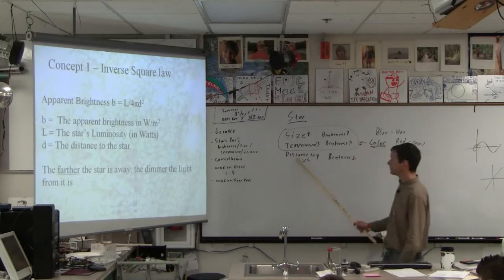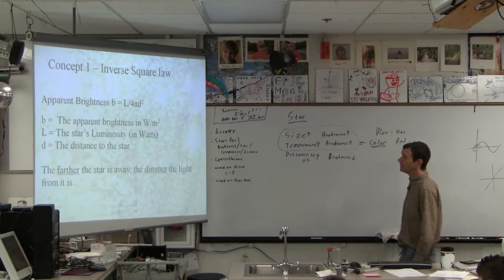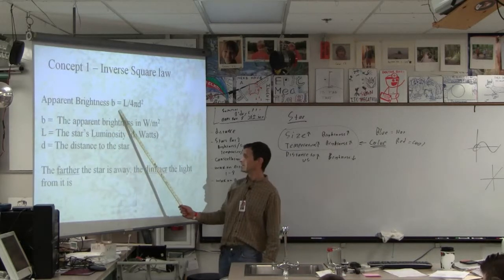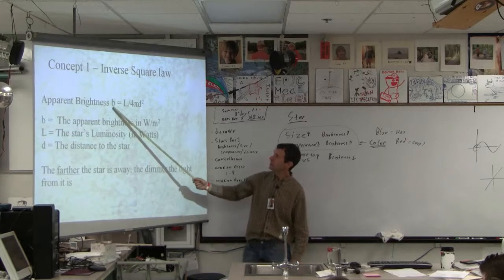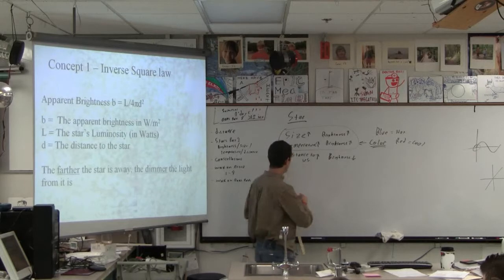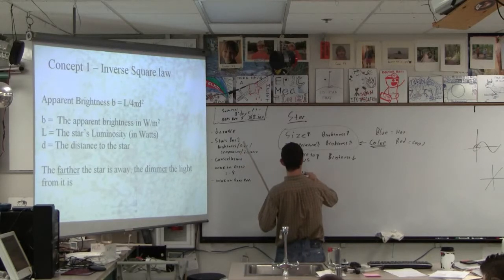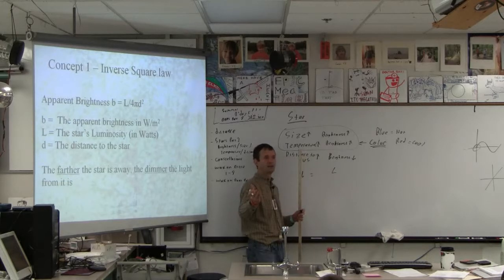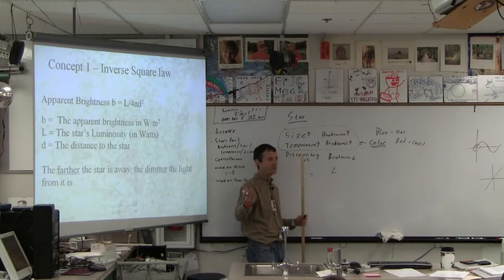And then there's the inverse square law, now we're talking about distance. And there's something called apparent brightness, and this is where physics ends and astronomy begins. We talk about this thing is the luminosity, I don't know if you noticed, was in watts. So the brightness is the actual luminosity, so basically like our sun is something like times 10 to the 26th watt, it's like a big light bulb.